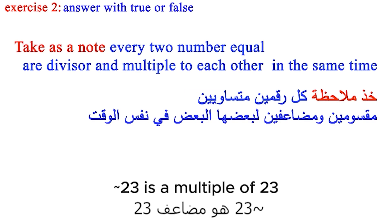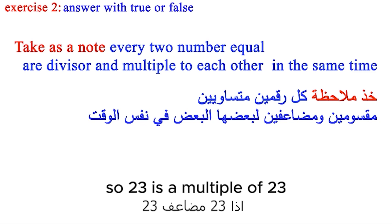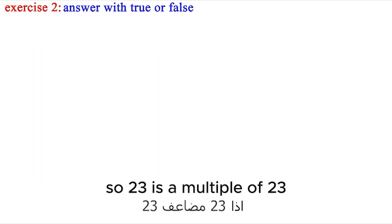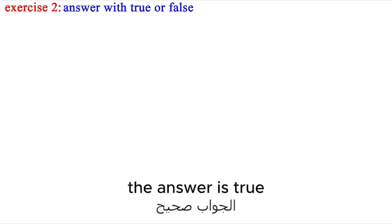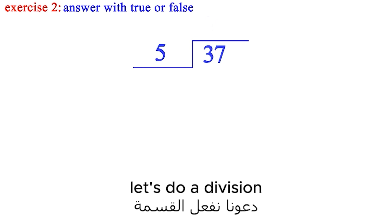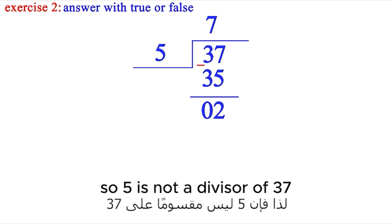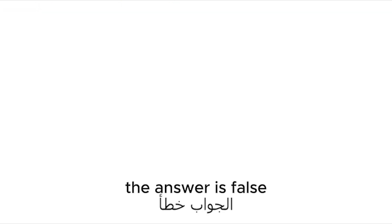Is 23 a multiple of 23? Think the same way: 23 times 1 equals 23, and 23 is a divisor of 23, so 23 is a multiple of 23 — the answer is true. Is 5 a divisor of 37? Let's do a division. The remainder is not 0, so 5 is not a divisor of 37 — the answer is false.